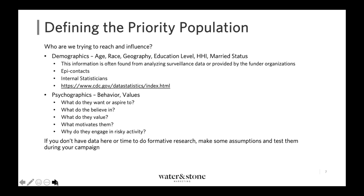Now we're going to talk about who we're trying to reach — how we define our priority population or target audience. There are a number of different ways to do this. The first and most common, especially in the digital space, is based on demographics: age, race, geography, education level, household income, or marital status. This information is often found from surveillance data provided by the CDC or other funding organizations. There's a link here to the CDC site where you can get statistics.